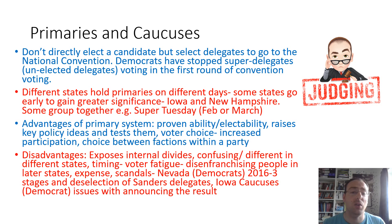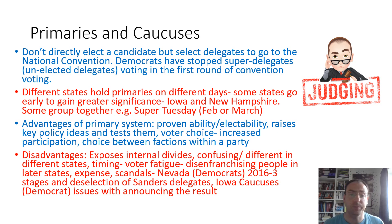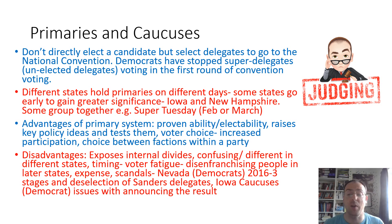Primaries and caucuses don't directly elect a candidate, but select delegates to go to the national convention — again we get a two-stage electoral process, as we'll see again with the electoral college. You are not choosing the candidate directly; you are choosing delegates who will vote for that candidate at the national convention. Democrats have recently stopped superdelegates — unelected delegates normally representing about 15% of delegates in the Democrat election — from voting on the first round in conventions. The national convention does still select the candidate, but normally the result is well known before the convention.